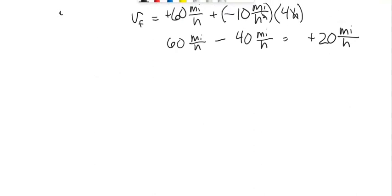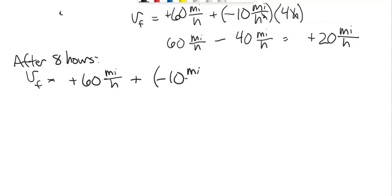So then v final after 8 hours, v final is 60 miles per hour minus 10 miles per hour squared times 8 hours. 8 hours, there we go, 8 hours. One of the hours cancels and we're left with 60 miles per hour.